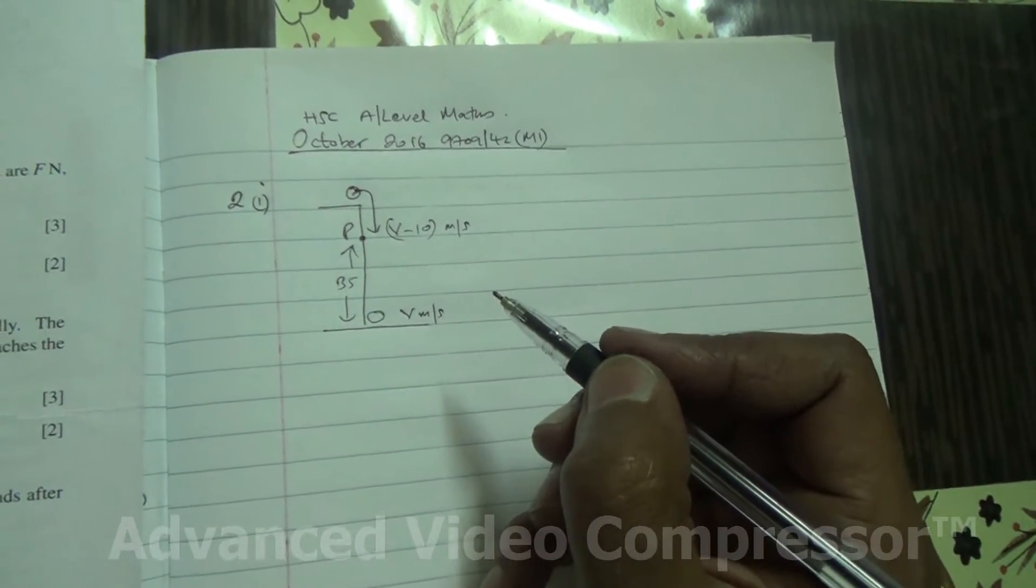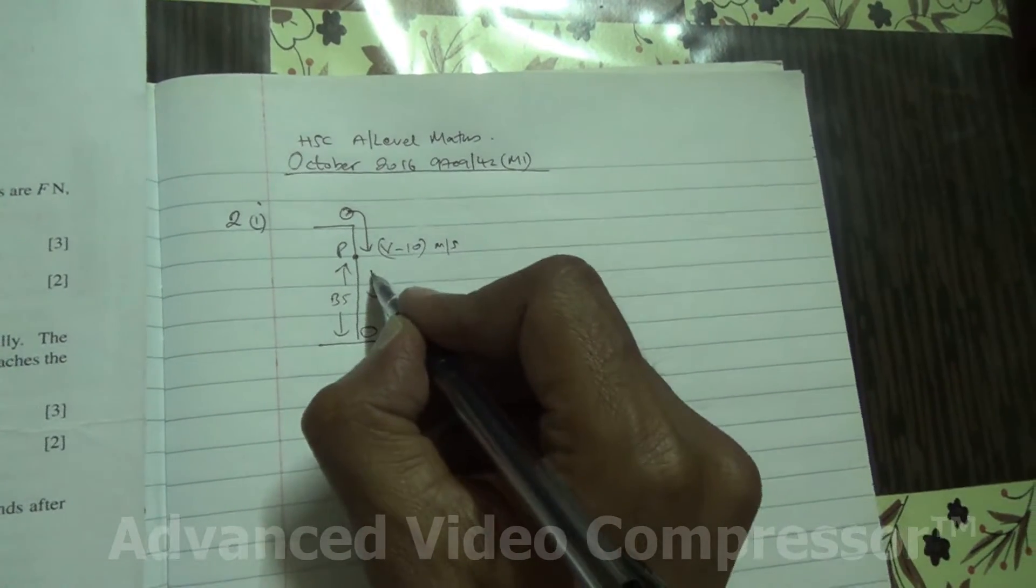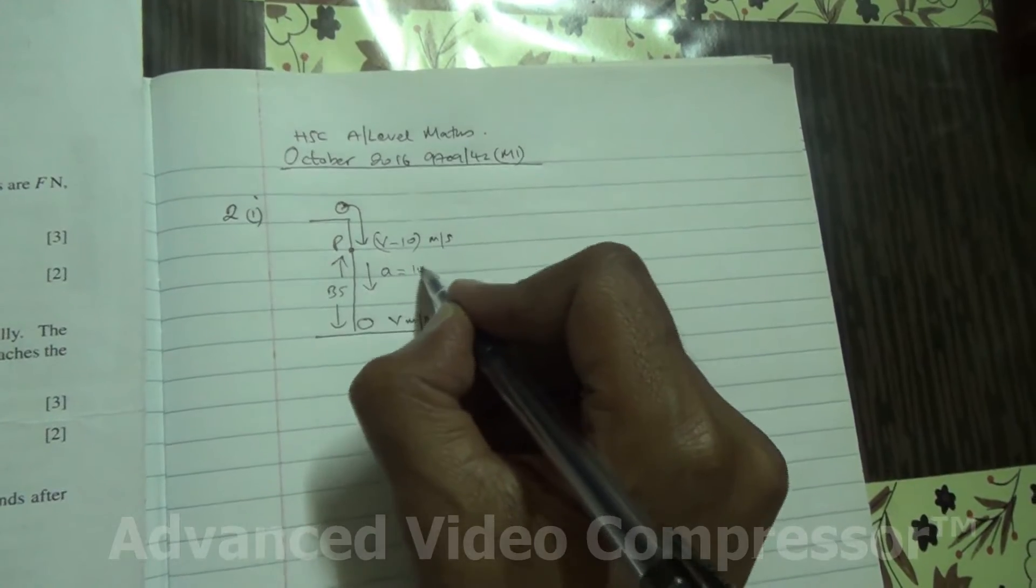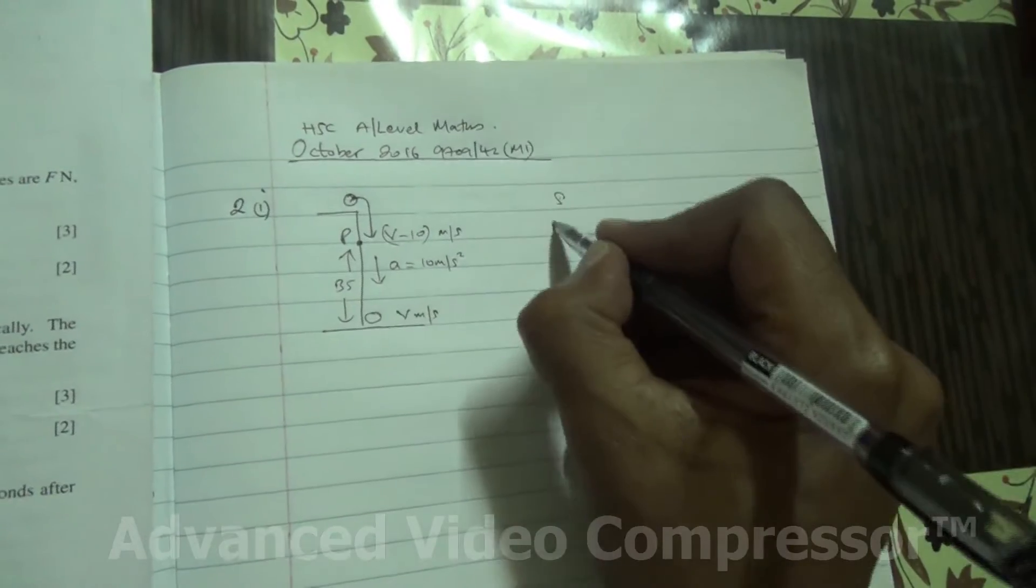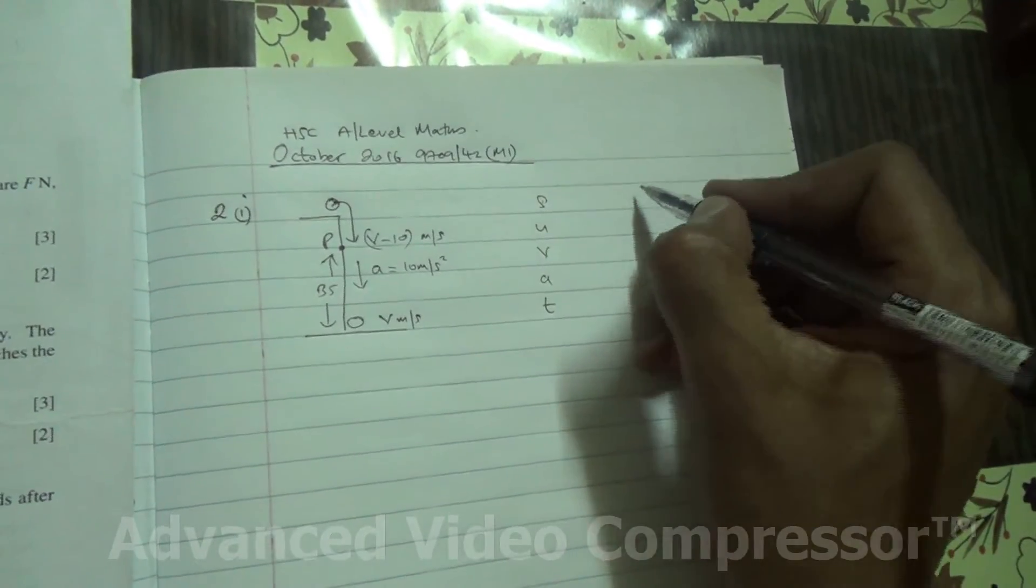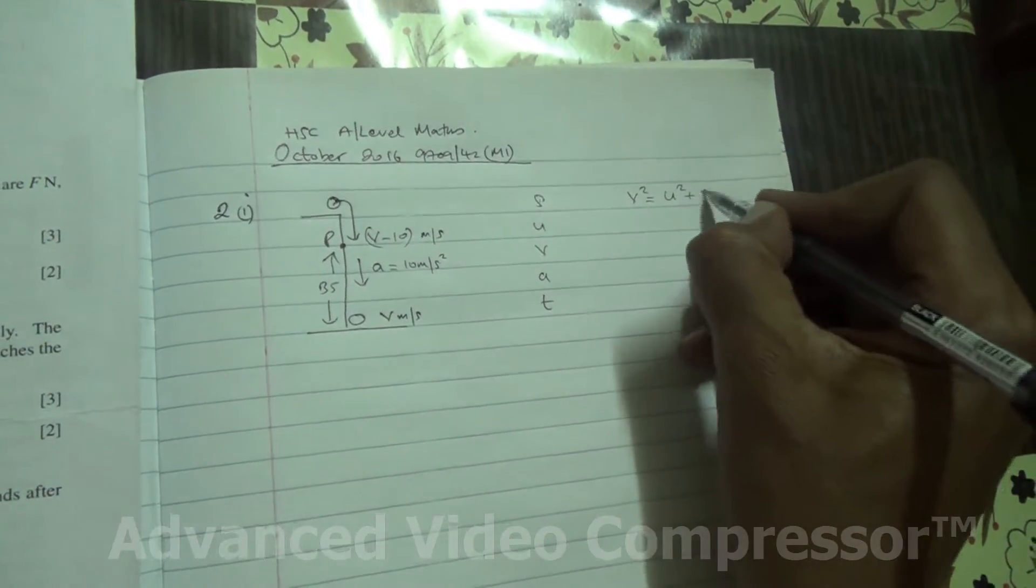So now, we are told that we need to find v. We need to realize that there's also the acceleration due to the force of gravity. a is equal to 10 meters per second squared. Now, how can we find v? We can use the SUVAT equation. And we can use v squared is equal to u squared plus 2as.